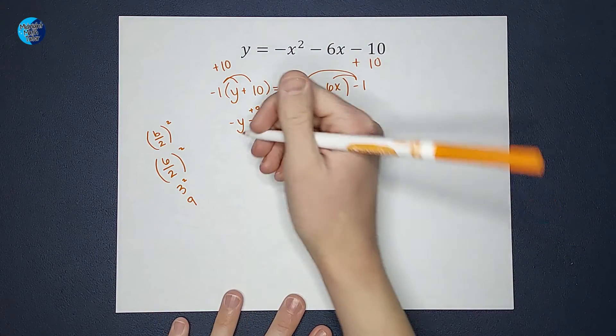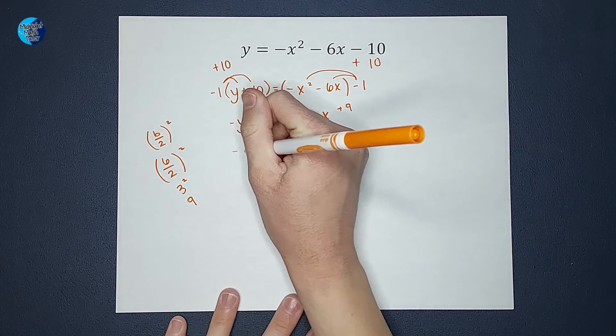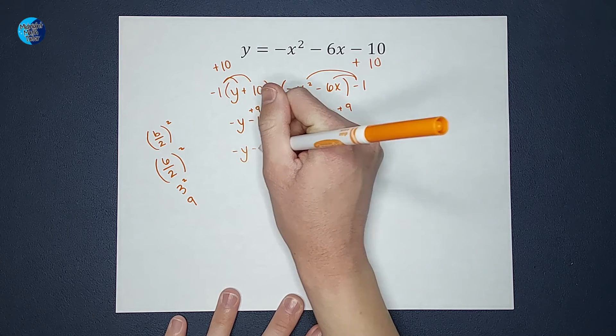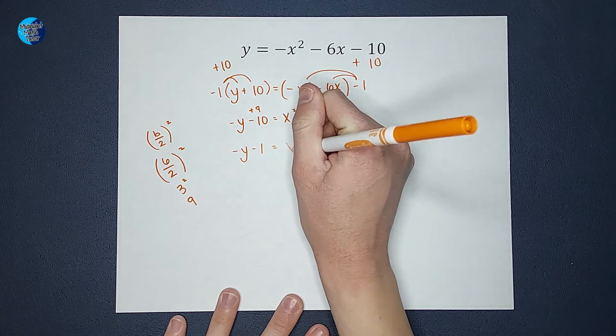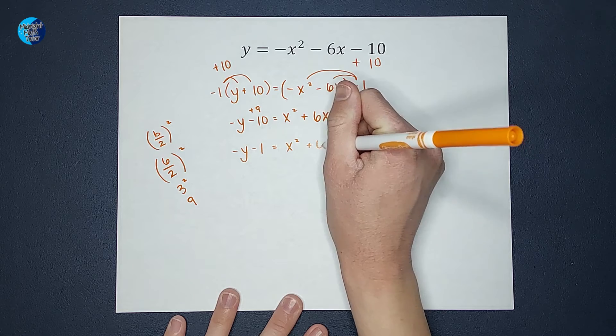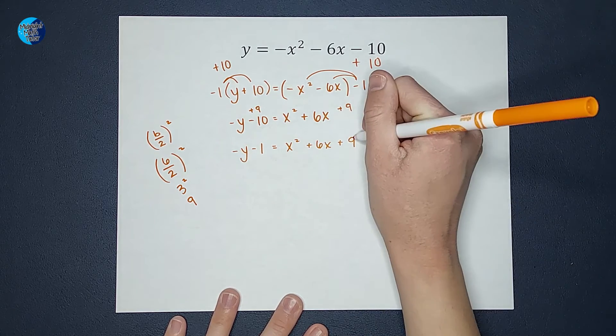So when I add that 9, I end up with negative y minus 1 on this side, and x squared plus 6x plus 9 on this side.